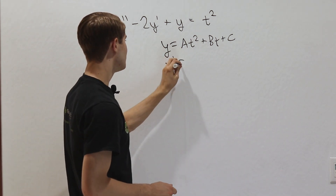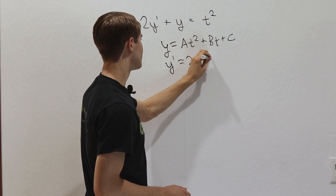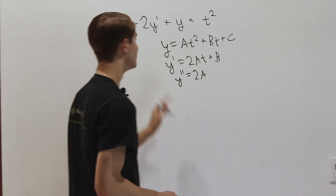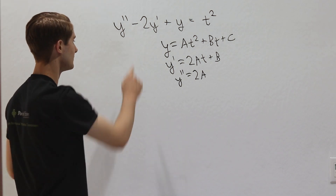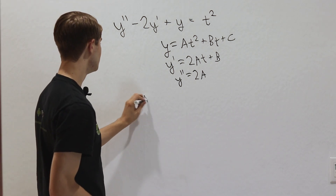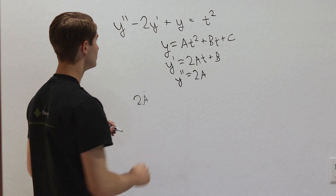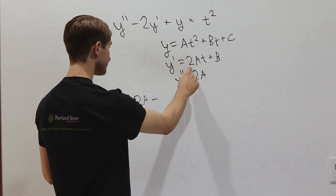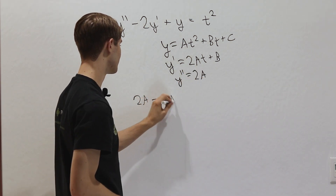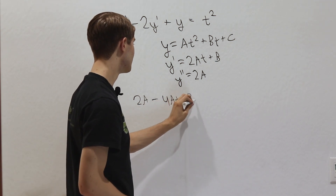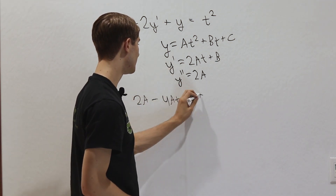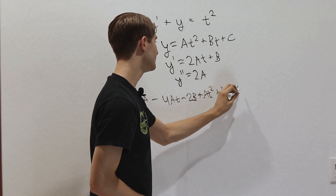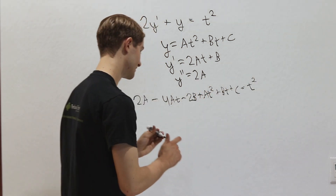We get y prime equals 2at plus b, and y double prime equals 2a. Plugging in: y double prime is 2a, minus 2y prime gives minus 4at minus 2b, plus y gives at squared plus bt plus c, and that equals t squared.